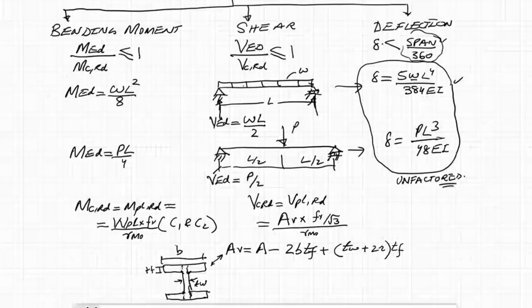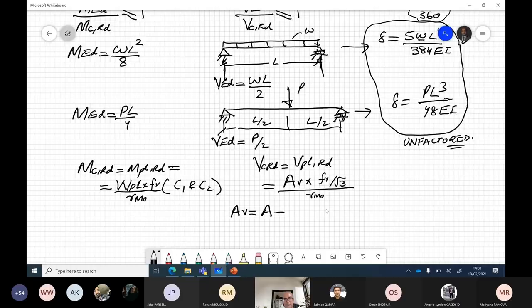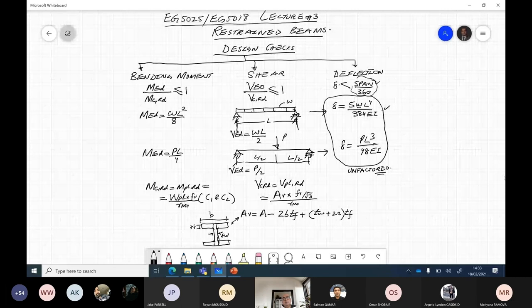A_V is equal to area of the section minus 2bt_f plus t_w plus 2r into t_f. It is actually the area of the web. Now these are all design checks that need to be carried out.